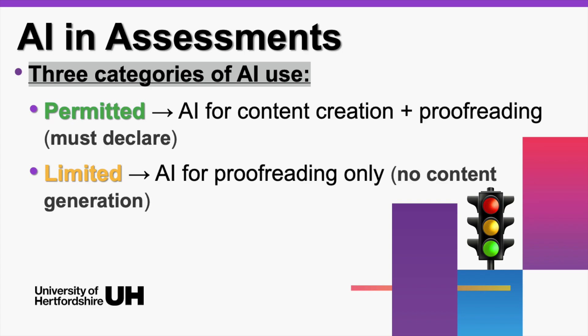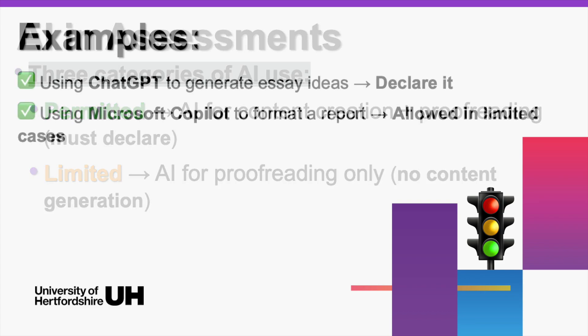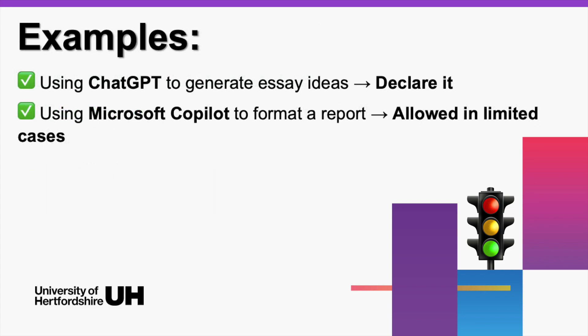Limited — amber light. AI is only allowed for proofreading: fixing grammar, spelling, and structure, but not for generating content. For example, you use Microsoft Copilot to check your writing for clarity, but you don't let it rewrite paragraphs for you.